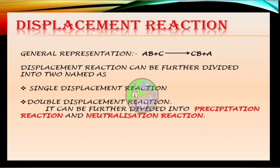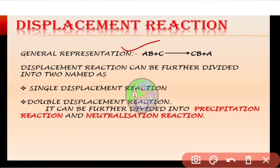The next reaction is displacement reaction. A chemical reaction in which an element takes the place of another element in a compound is called a displacement reaction. Basically, a more reactive metal displaces a less reactive metal from its compound. Generally it is represented as AB + C → CB + A.